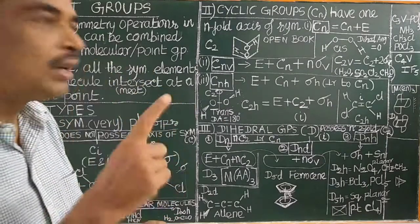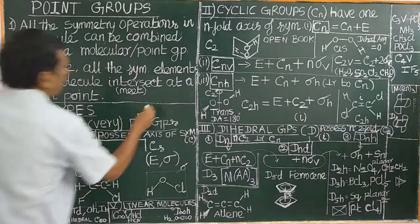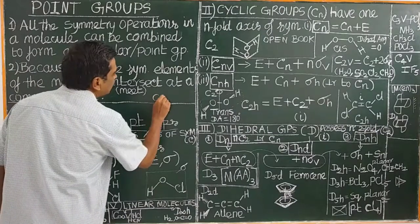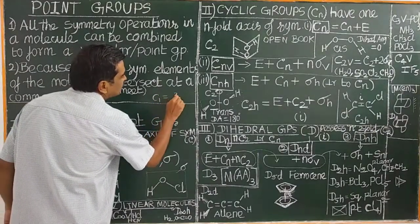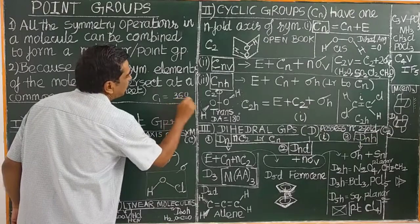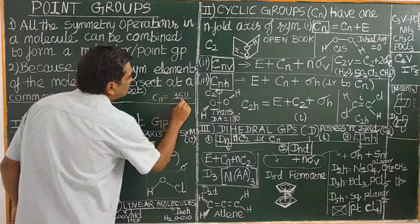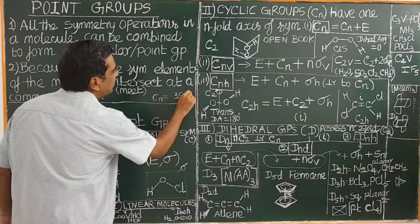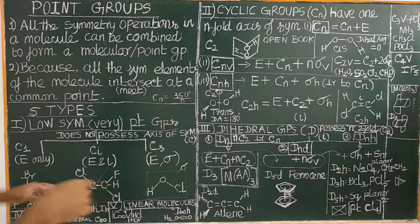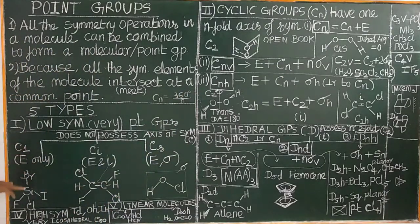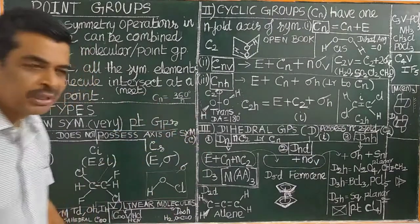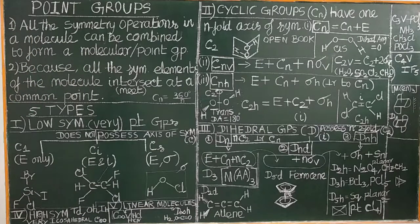C1 is essentially no operation. For C1, the rotation is 360 degrees divided by N, so 360 degrees divided by 1 equals 360 degrees. This molecule does not have any principal axis of symmetry or subsidiary axis of symmetry. It consists of only E.